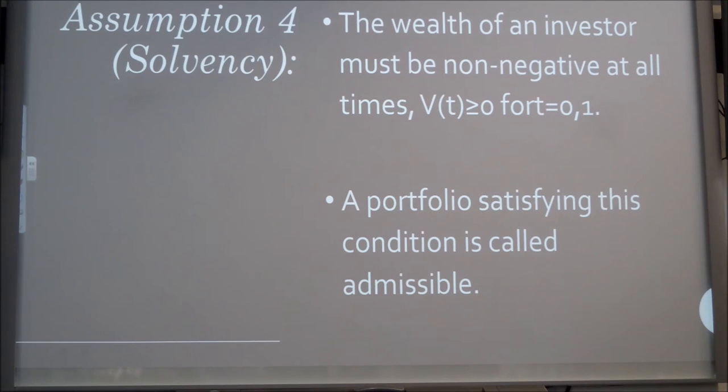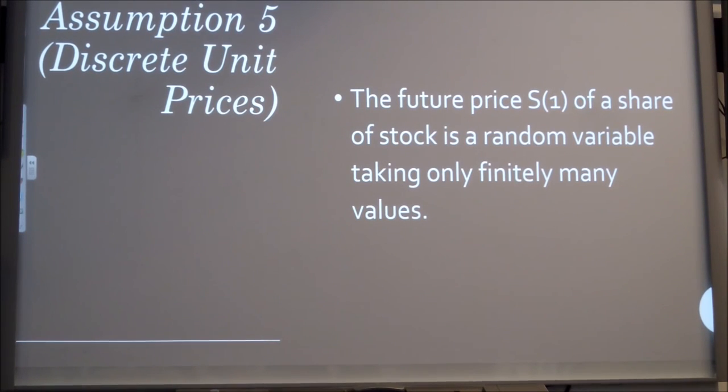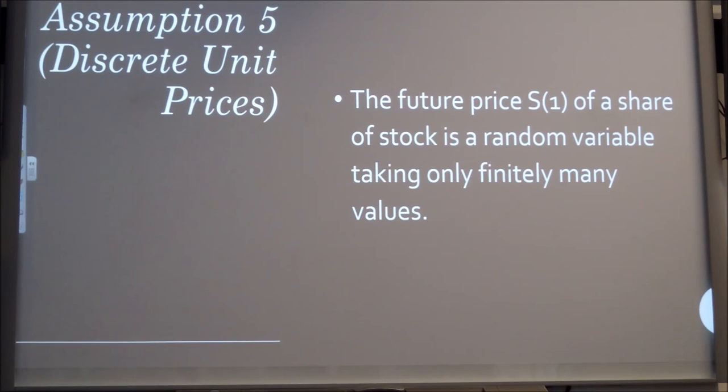Another assumption is solvency, and I kind of touched on it with my example. The wealth of an investor must not be negative at all times, so we need to balance the bonds with the stocks, so that the negativity of the stock, if it were to go down, is counteracted by the positivity of the bond. And if it satisfies, then we call it admissible. One more assumption is, in the real world, the number of possible different prices is finite, because they're quoted to within a specified number of decimal places, and because there is only a certain finite amount of money in the whole world supplying an upper bound for all prices. So the price of Apple wouldn't really tend to infinity. It's a great company, it's doing really well, but it's always going to have an upper bound for how well it can do. It can be worth billions and billions of pounds, but it will always have this upper bound.